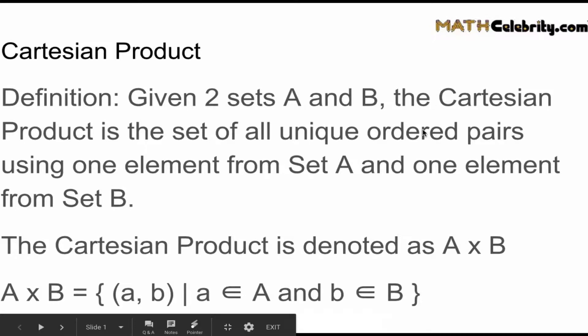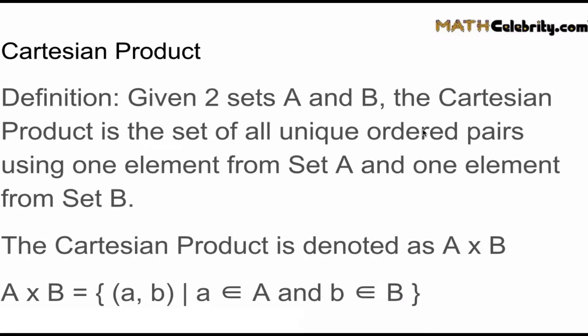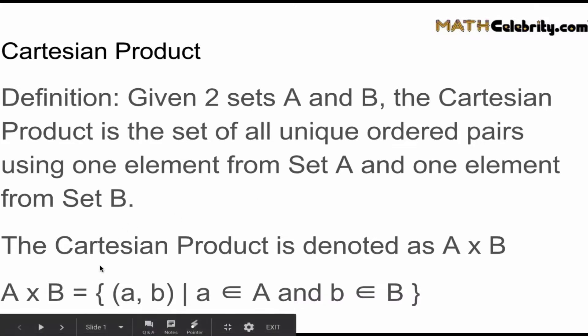The Cartesian product takes two sets—in this example we'll call them set A and B. It's the set of all unique ordered pairs using one element from set A and one element from set B. We denote the Cartesian product as A × B. Using set notation, the Cartesian product is read as the set of ordered pairs such that a is an element of set A and b is an element of set B.